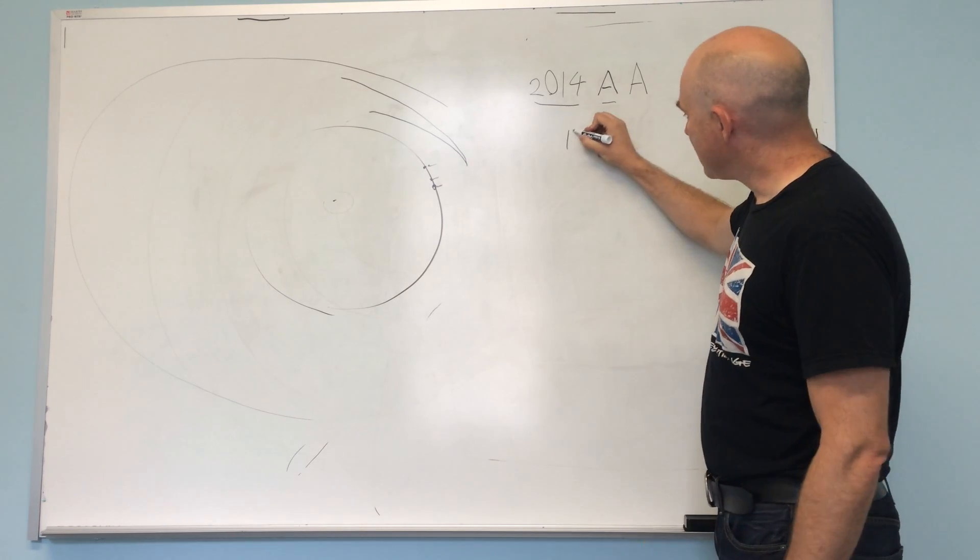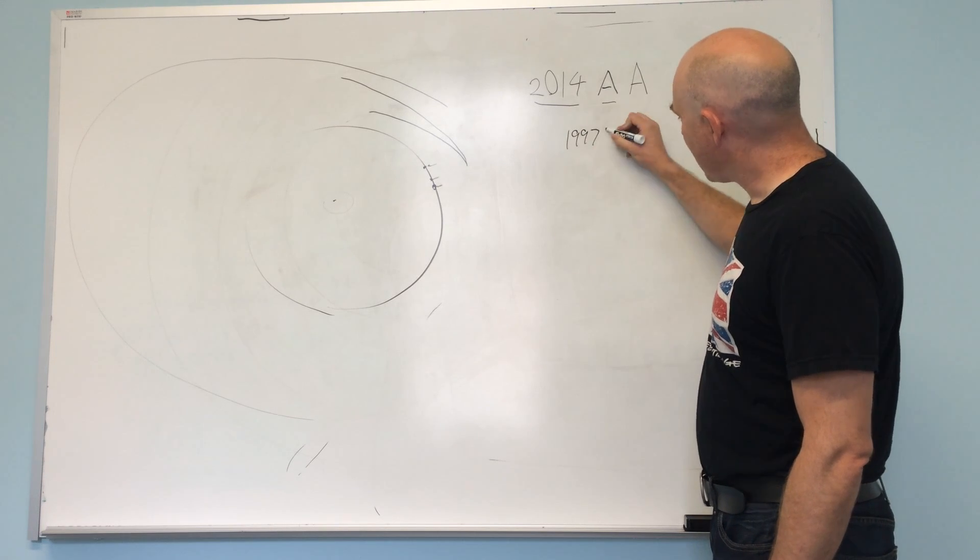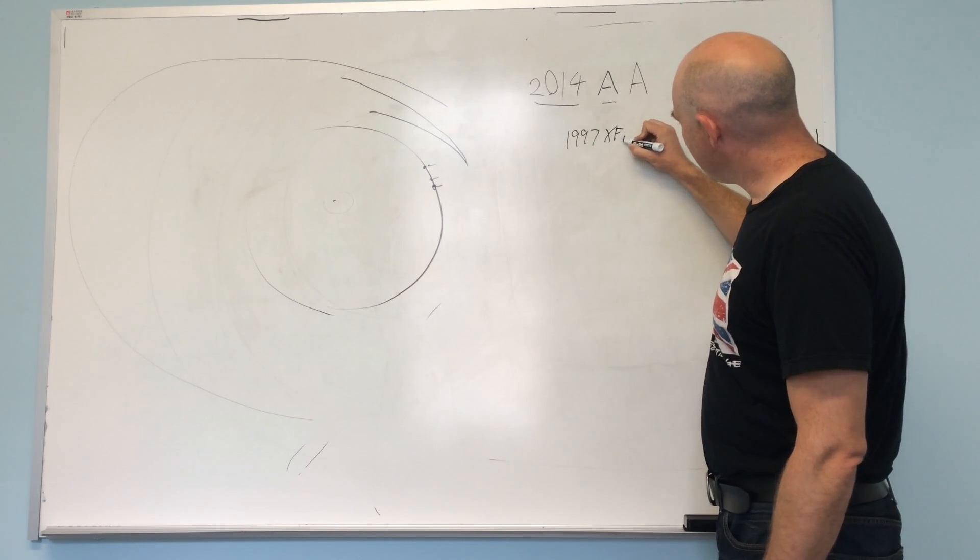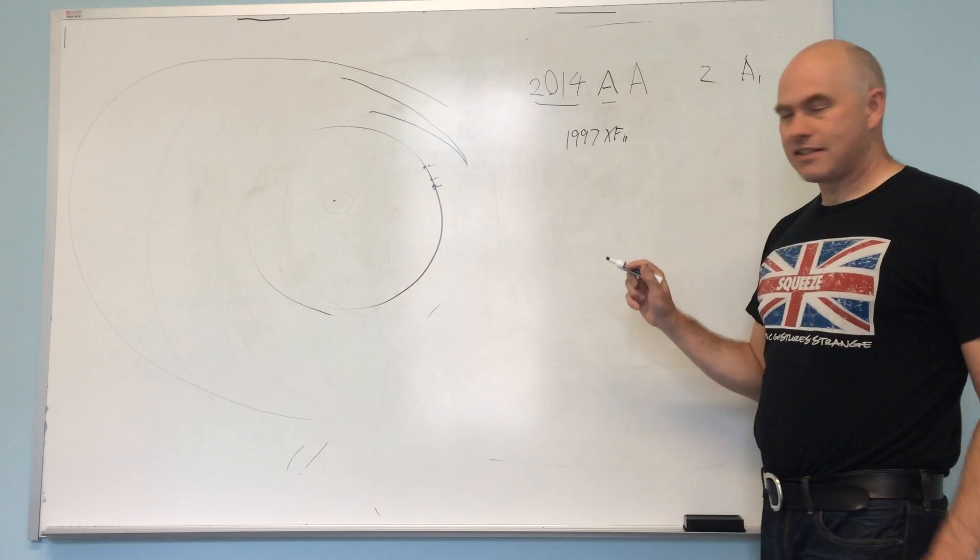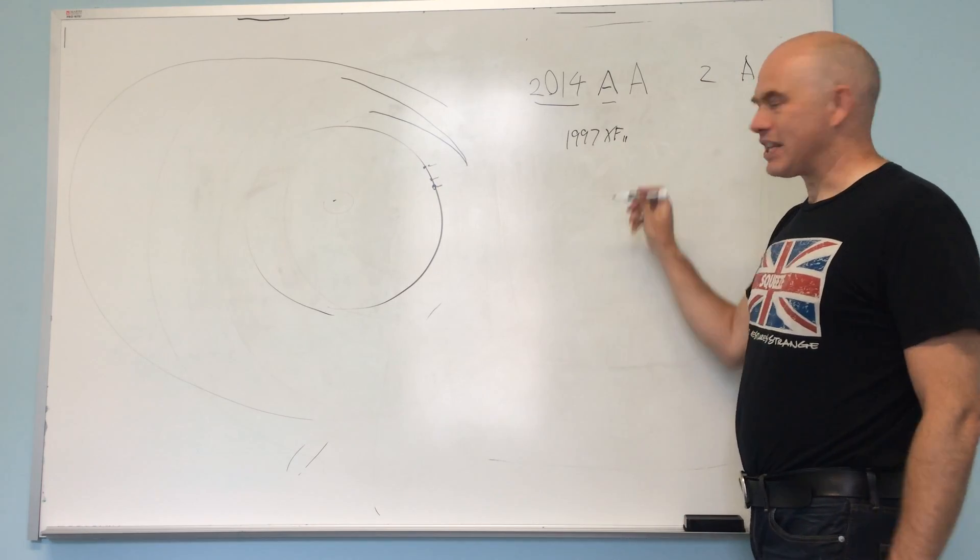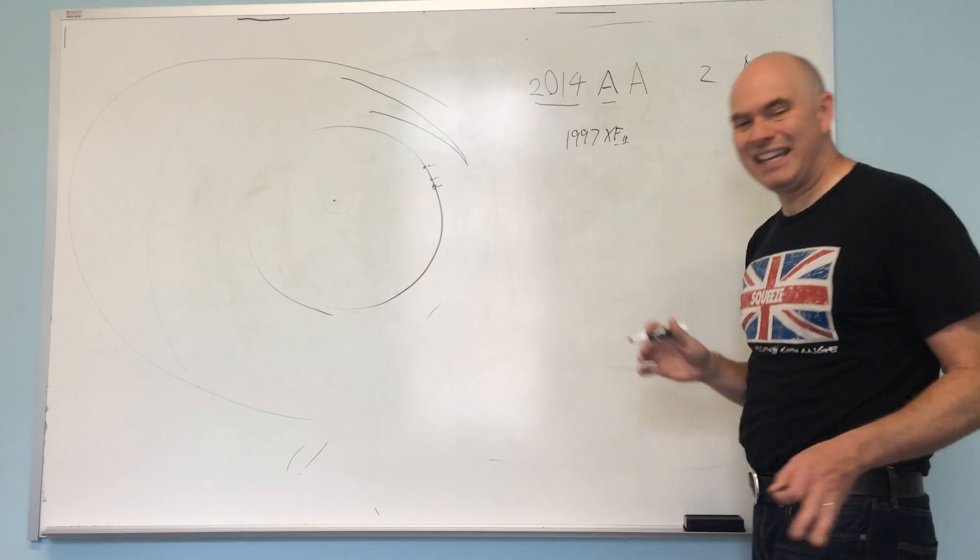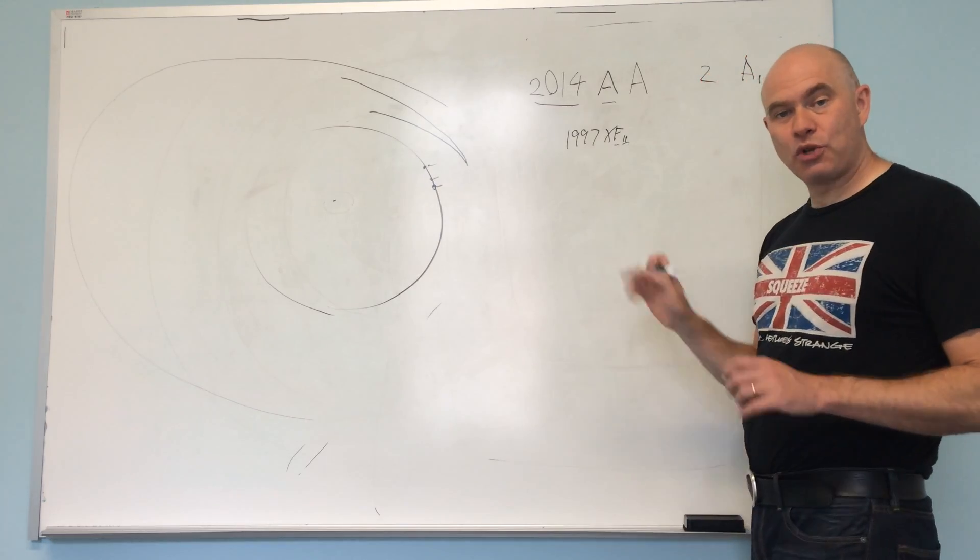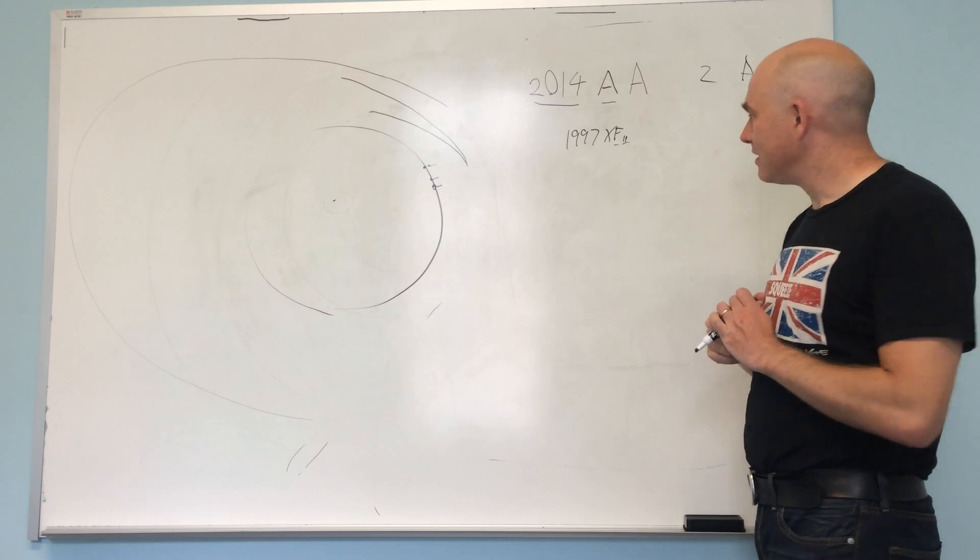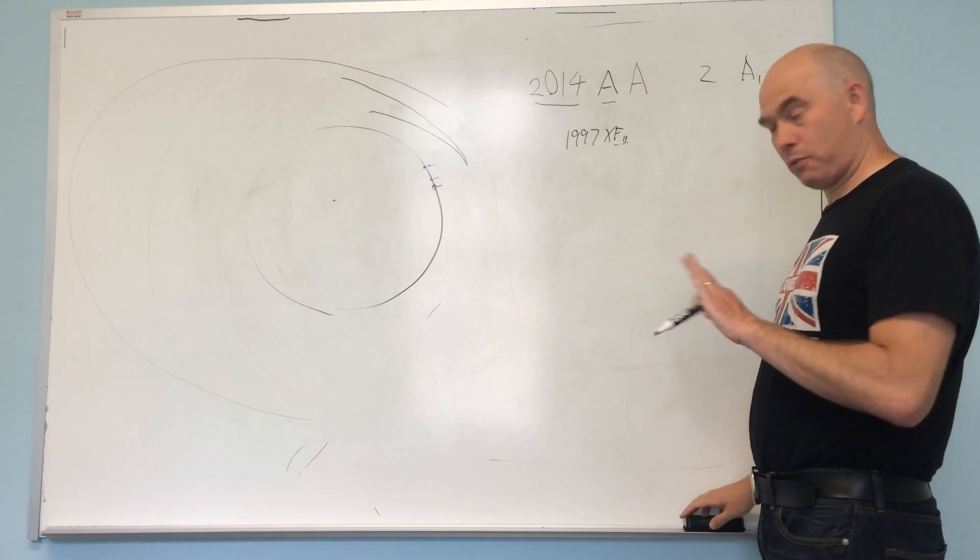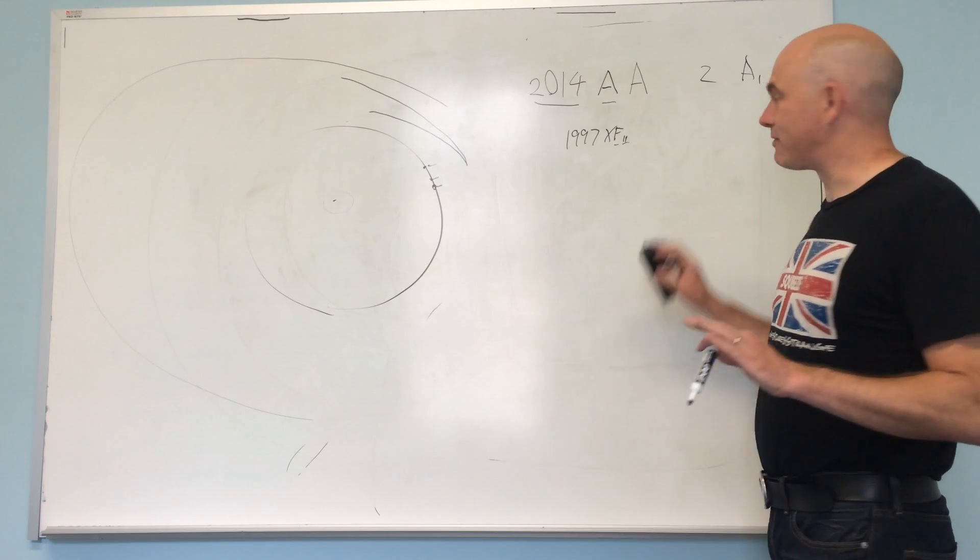So that's how you know that, like, 1997 XF11 has, it was discovered towards the end of the year. It was, well, I don't know, 11, it was like the 300th object discovered towards the end of November. So it was a, there was a lot discovered at that time.